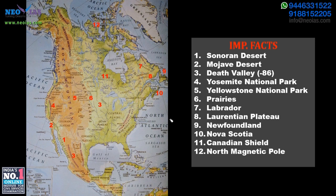We also have the Laurentian Plateau mentioned earlier, related to climatic regions. Then there is Nova Scotia and the Bay of Fundy, which are famous for their very large tidal range and tidal energy generation. The Canadian Shield covers this region as well.